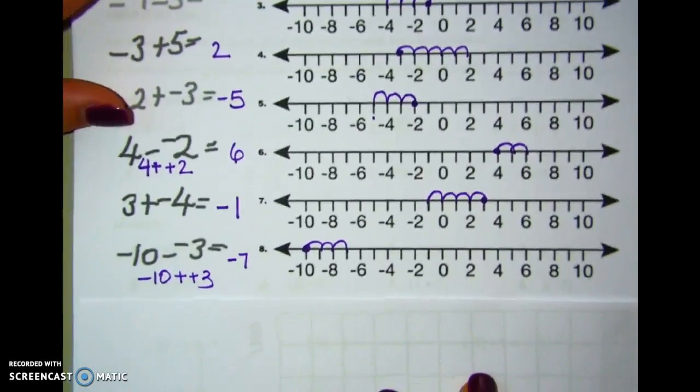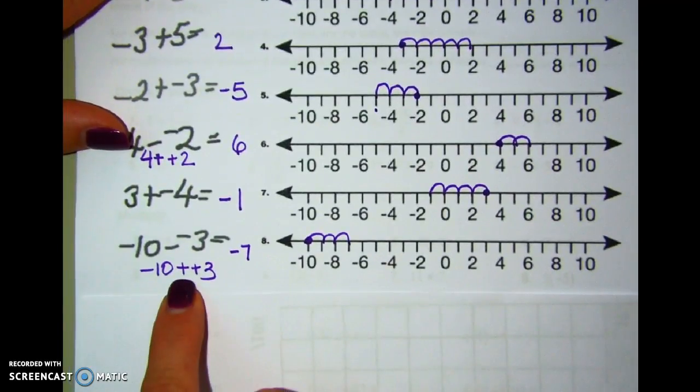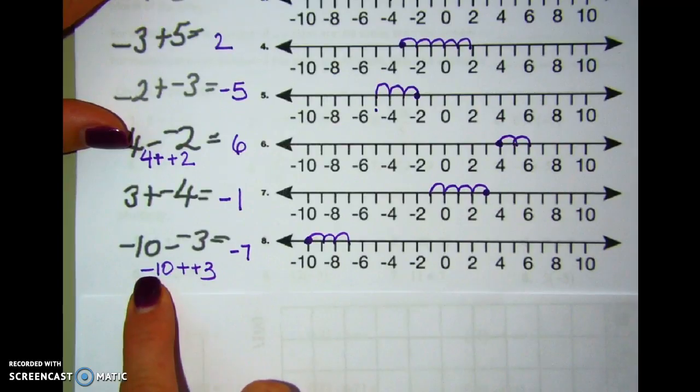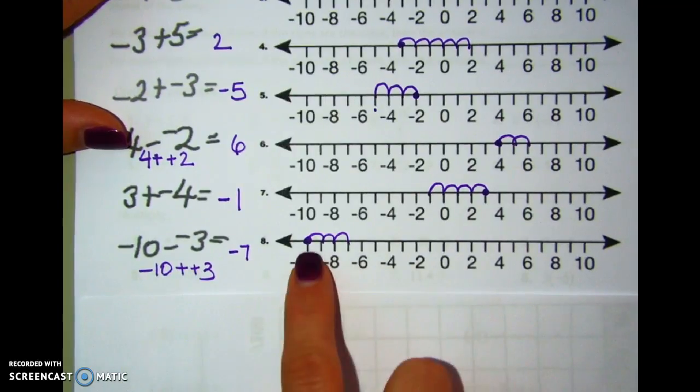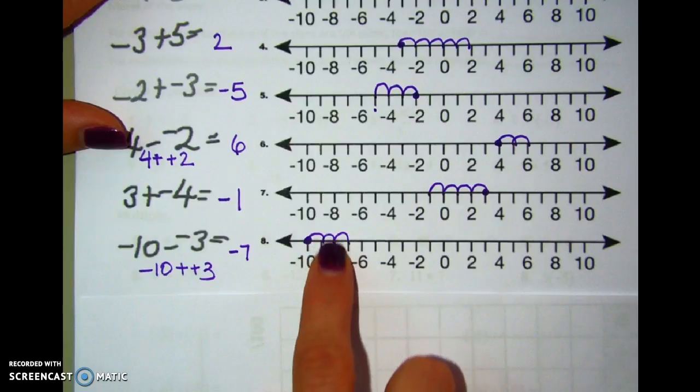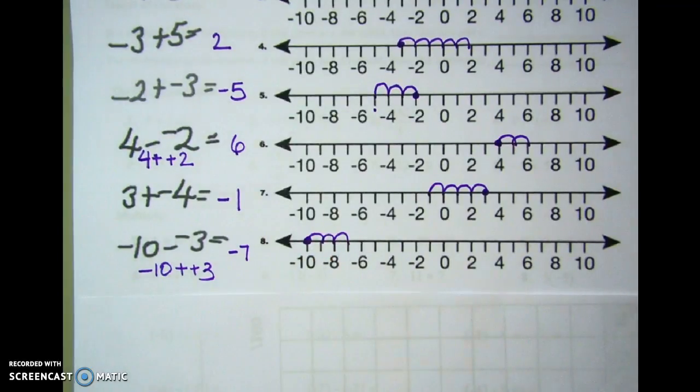And negative 10 minus negative 3, I can rewrite it as add the opposite, negative 10 plus 3. So starting at negative 10, adding 3, move to the right, and you end up at negative 7.